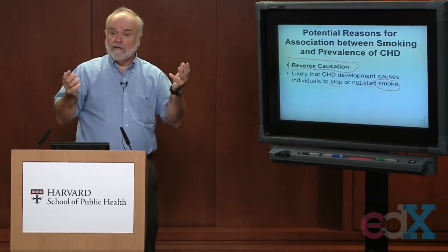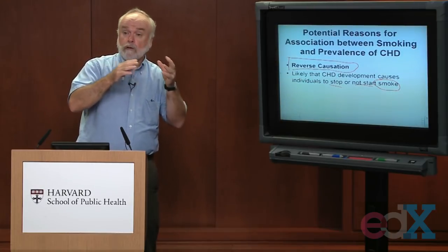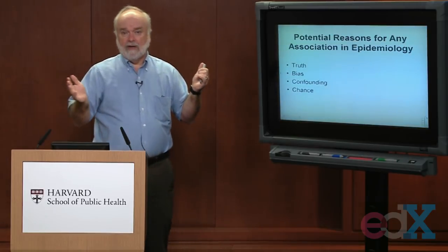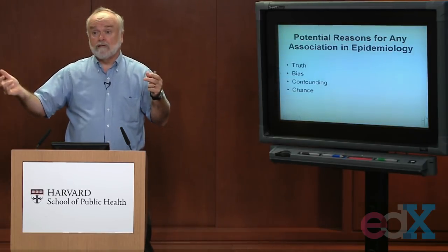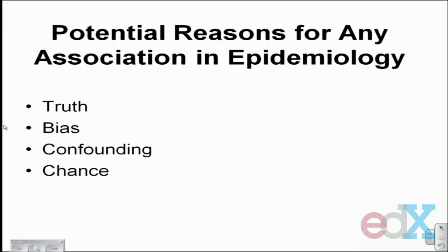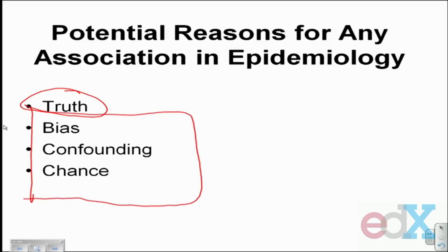That's what we mean by reverse causation. So there are three problems with cross-sectional studies — three potential reasons for why we see higher prevalence in one group than another. And on top of that, in any type of study — cross-sectional, cohort, case-control, or experimental — whenever we find an association, we must consider whether it reflects truth, or whether it's due to bias, confounding, or chance. I'll be applying these concepts to cross-sectional studies going forward.